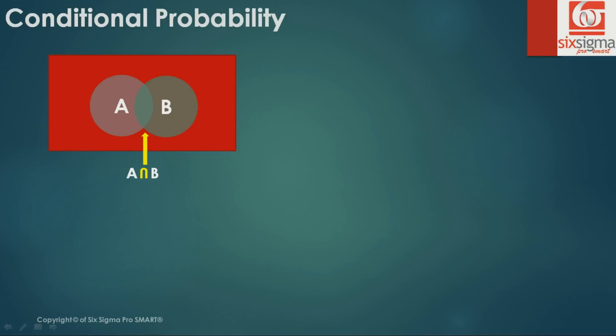Bayes' theorem is nothing but an application of conditional probability. This red rectangular space is the sample space - a collection of all possible outcomes of an experiment. Let there be events A and B. These are not disjoint events; they are overlapping. The portion which is common to both A and B is known as A intersection B.